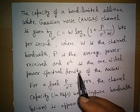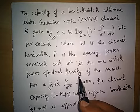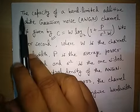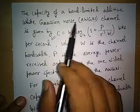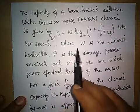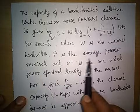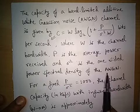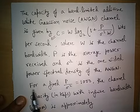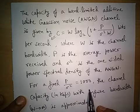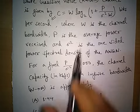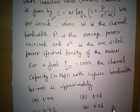In this video we will learn Shannon's channel capacity theorem and solve a previous year GATE question. The question reads: the capacity of a band-limited additive white Gaussian noise channel is given by C equals W log₂(1 + P/σ²W) bits per second, where W is the channel bandwidth, P is the average power received, and σ² is the one-sided power spectral density of additive white Gaussian noise. For a fixed P/σ² equals 1000, the channel capacity in kilobits per second with infinite bandwidth (W → ∞) is approximately which of the following?